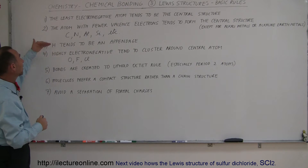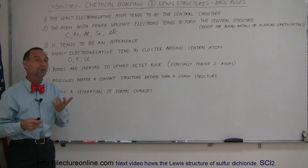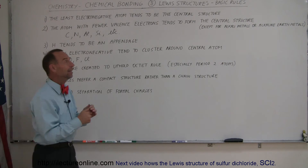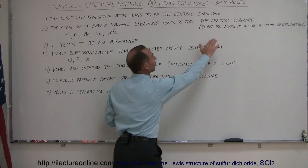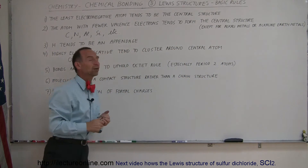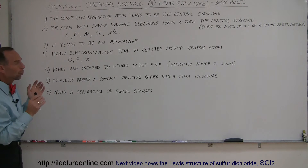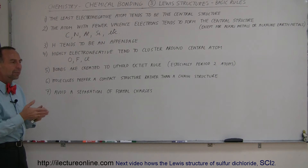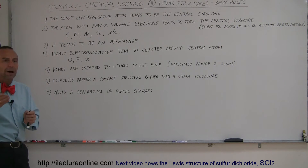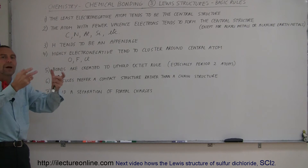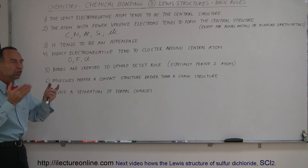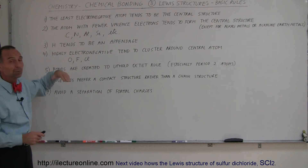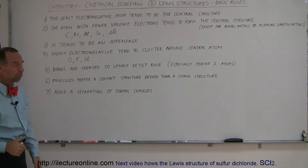That leads directly to rule number two: the atoms with fewer valence electrons — again, except for those that are part of the alkali metals or alkaline earth metals — are the ones that form the central structure. They're able to make more bonds because they're less likely to grab electrons to themselves; they're more likely to share electrons. So these are the ones typically that form the central structure of molecules.